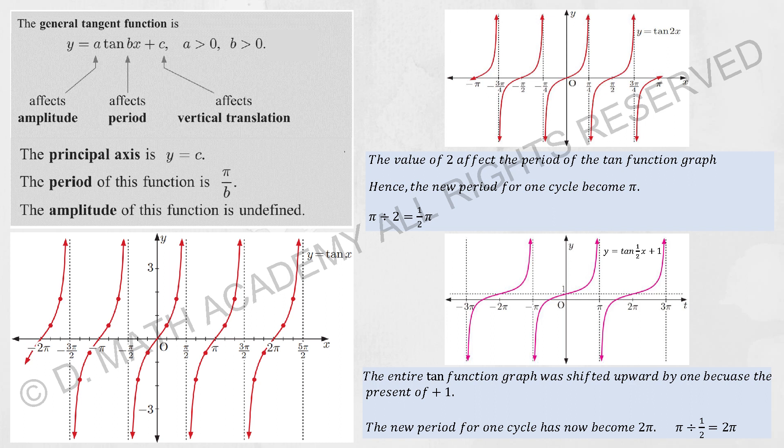When tangent equals to 2x, it will now squeeze the thing smaller. And tangent 1 over 2x, it will now change your period into 2 pi. It stretches the tangent graph out.